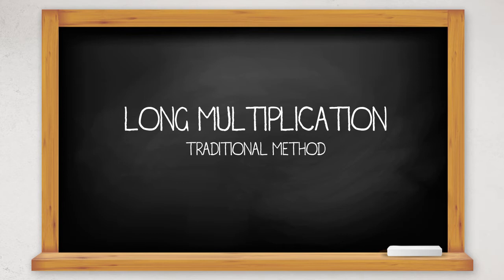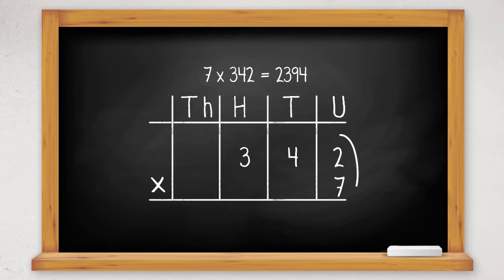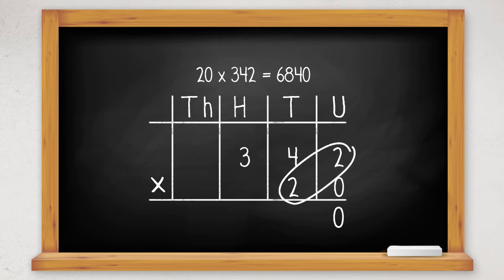Originally we did the first calculation: 7 times 2, then 7 times 4, and then 7 times 3. Then we changed to the second calculation and we did 20 times 2, then 20 times 4, and then 20 times 3.